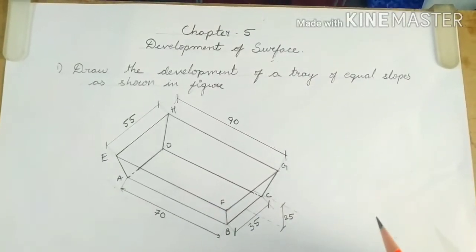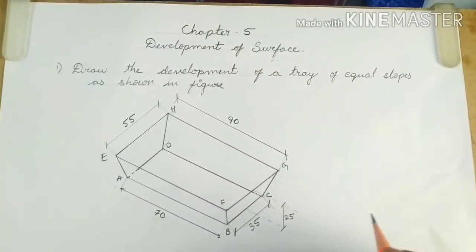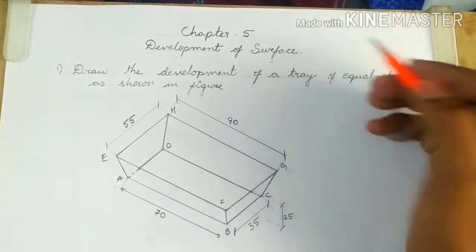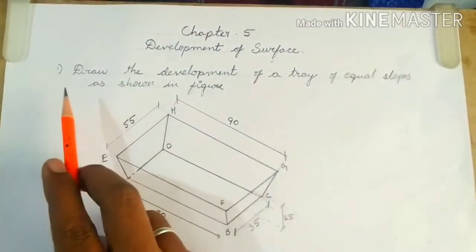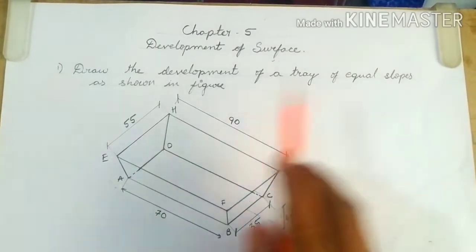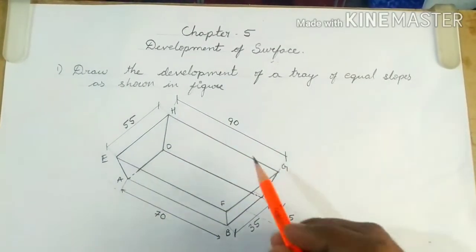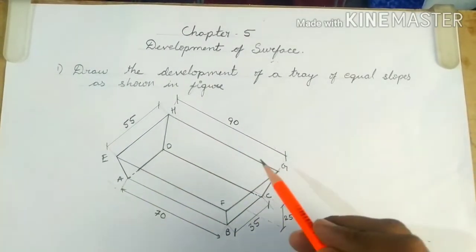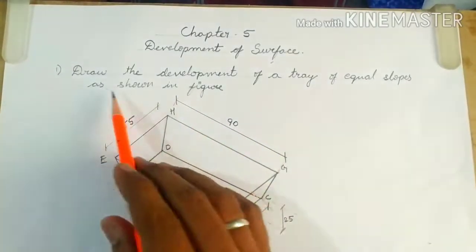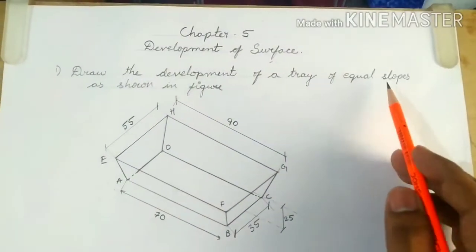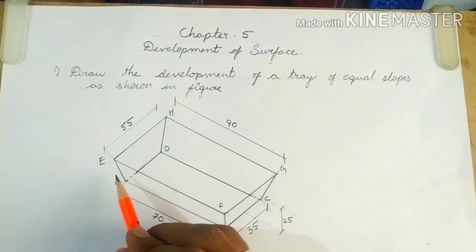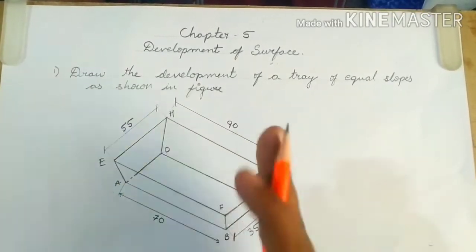Hello everyone, today we are going to discuss a problem from chapter 5, development of surfaces. The problem is: draw the development of a tray of equal slopes as shown in the figure. Equal slopes represent that the sides of the tray are inclined, not vertical.